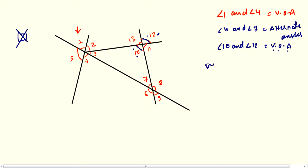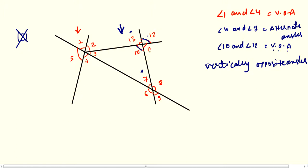Next is angle 7 and angle 13. This is your angle 7 and this is your angle 13. Both angles are present on the same side of the line — angle 7 is here and angle 13 is here. If angles are on the same side, they are corresponding angles. As you can see, angle 7 is inside these lines and angle 13 is just outside, so angle 7 and angle 13 are corresponding angles.